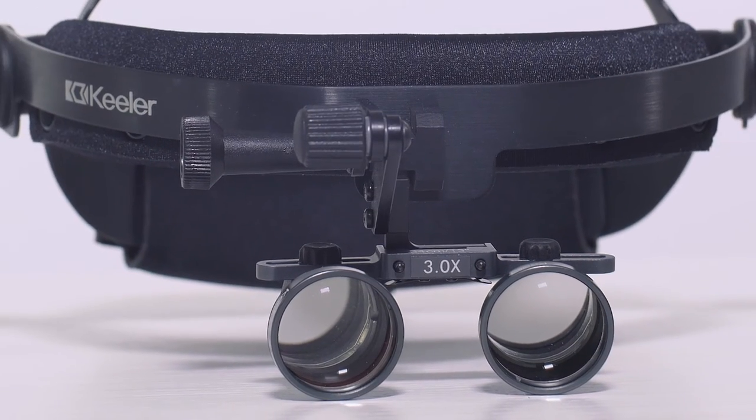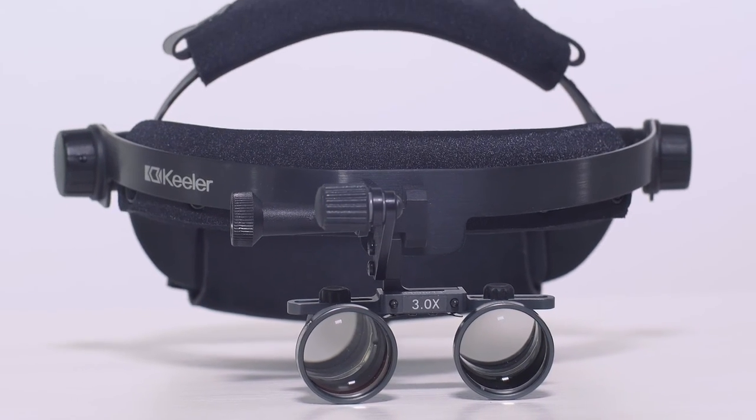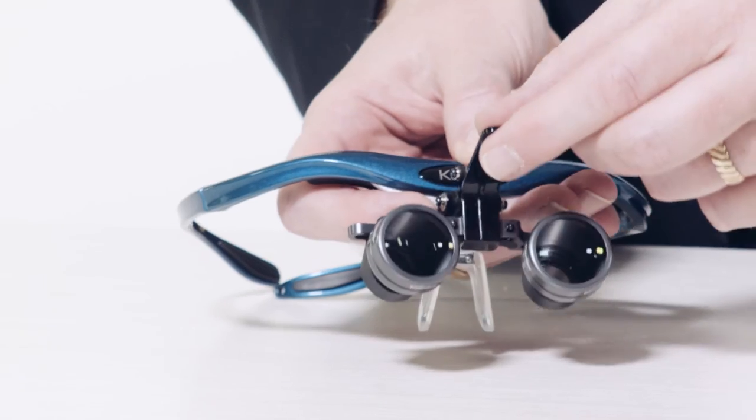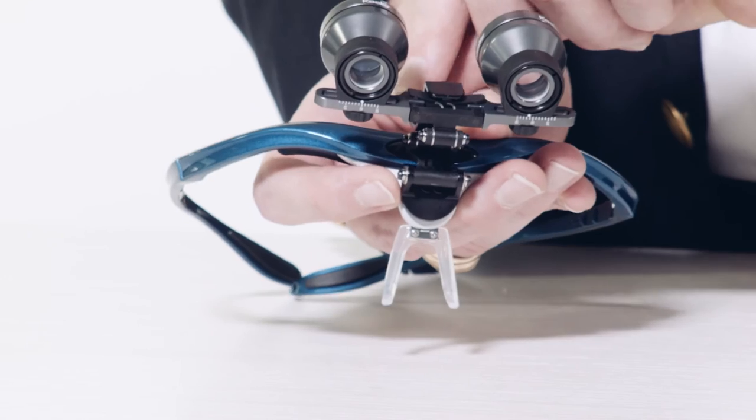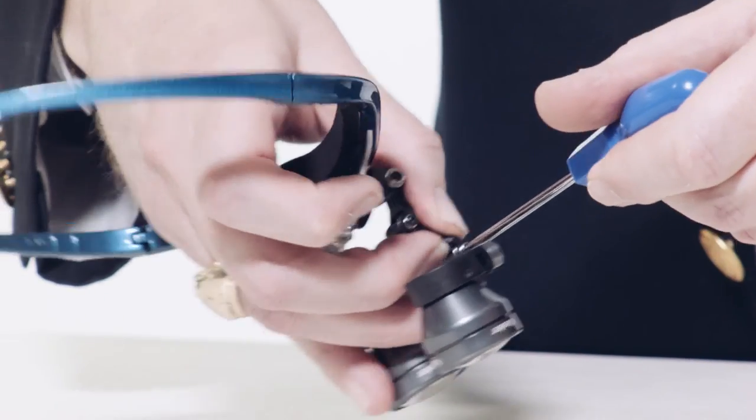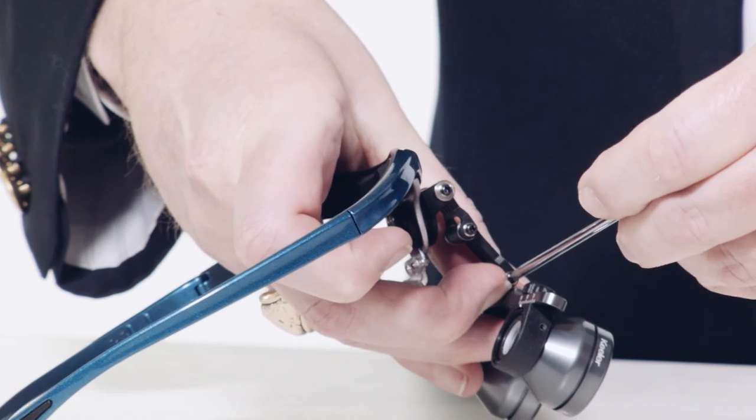Correctly fitted loops reduce back and neck pain. Make sure your loops are fitted at the optimal angle that is comfortable for you. The serializable lever allows you to flip the loops out of the way when not required. If the hinge becomes loose, tighten it by using a small Phillips screwdriver.